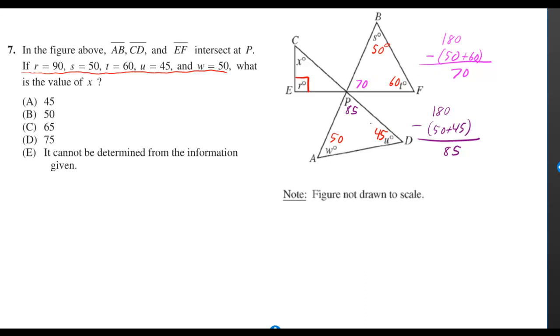Same process to get the 85. Then I can put 85 at angle CPB because I have vertical angles.